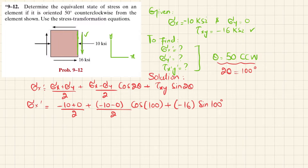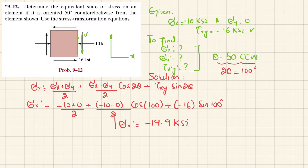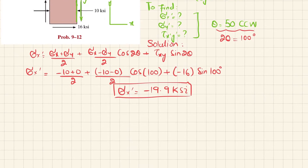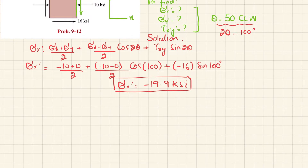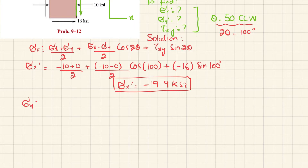Substituting the values with 2 theta equal to 100 degrees, Sigma X dash comes out to be minus 19.9 KSI.